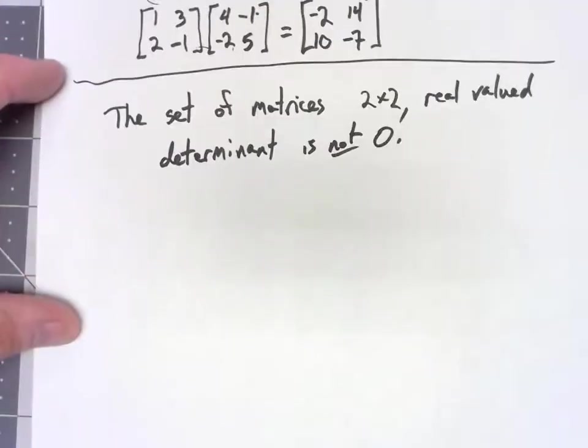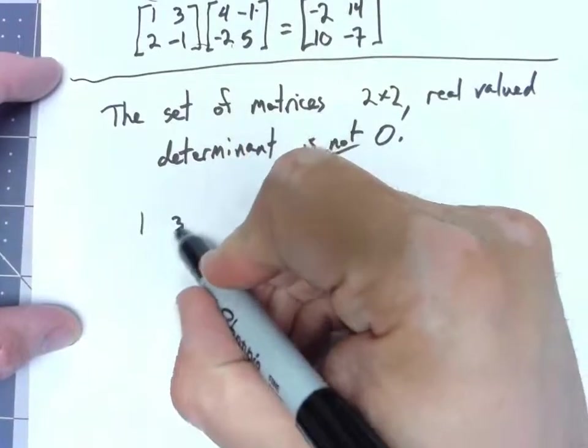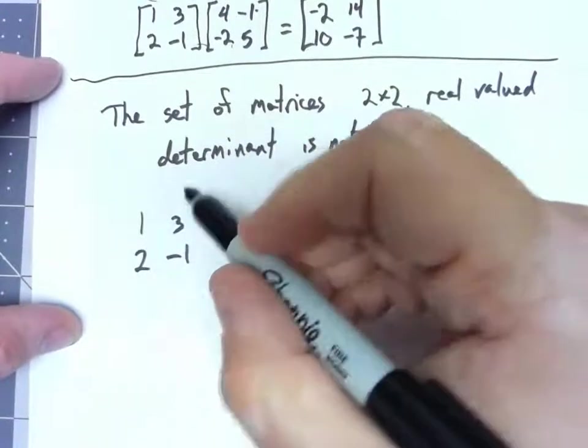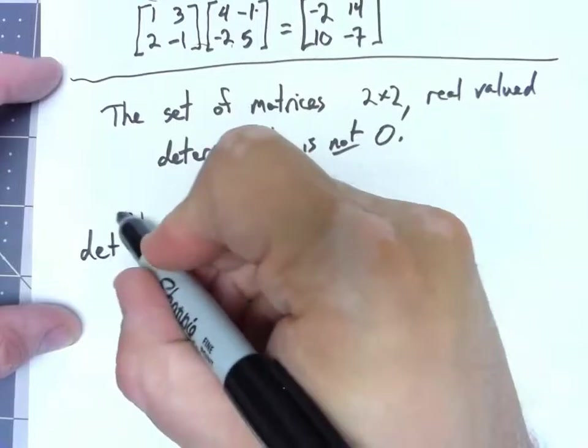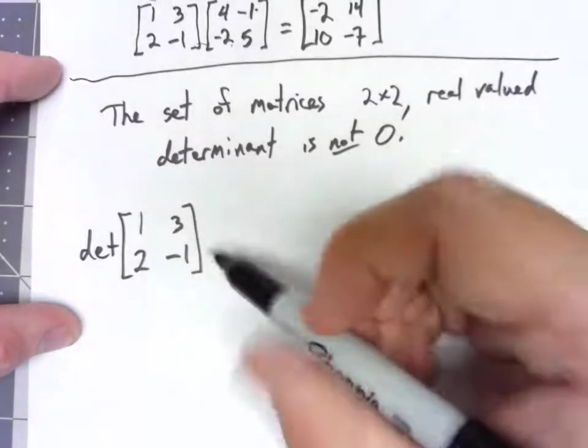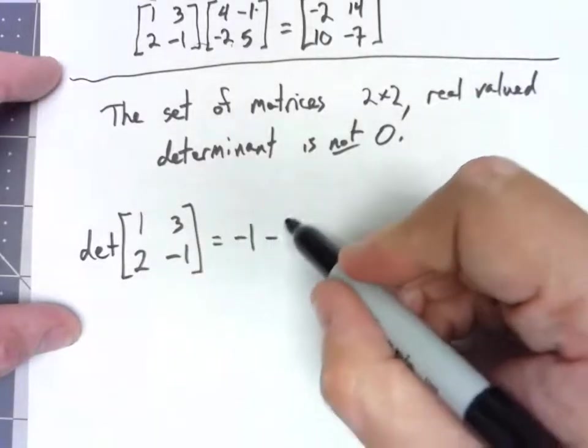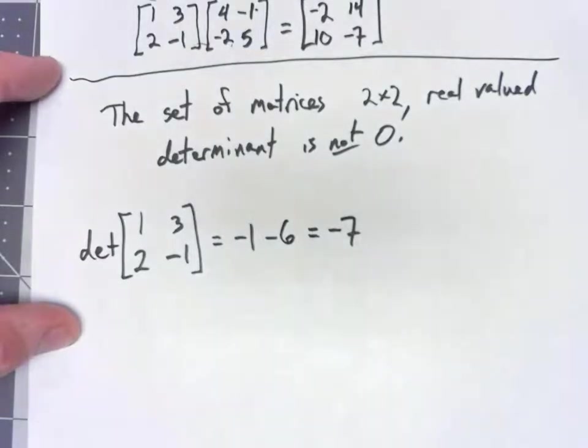So remembering what the determinant is, let's go and take one of these matrices again. If I had 1, 3, 2, negative 1, the determinant of that matrix, we multiply down minus multiply up. So I would have negative 1 minus 6. The determinant of that matrix would be negative 7.